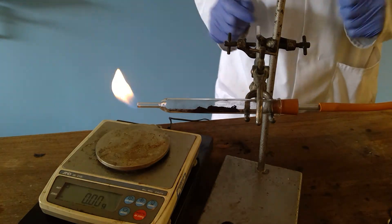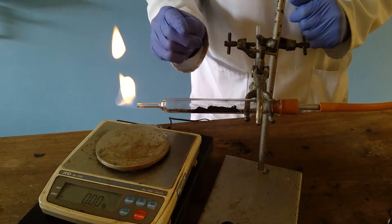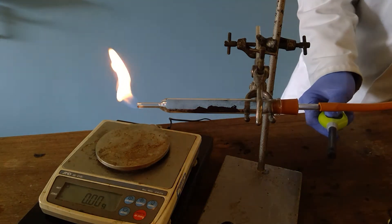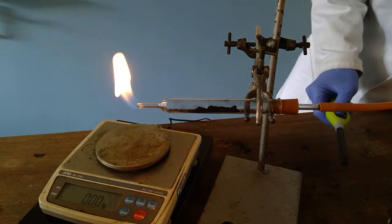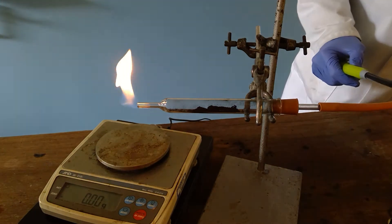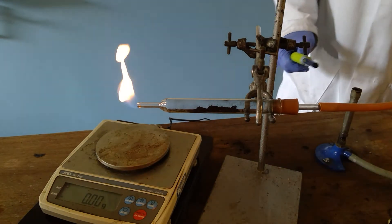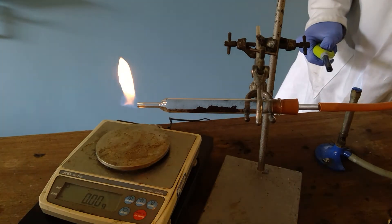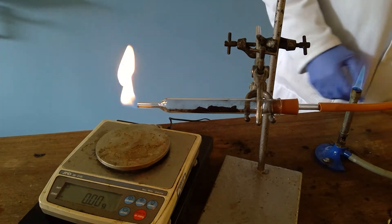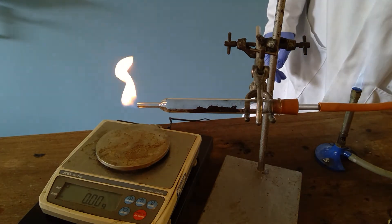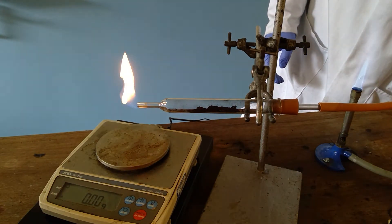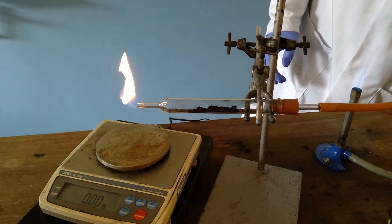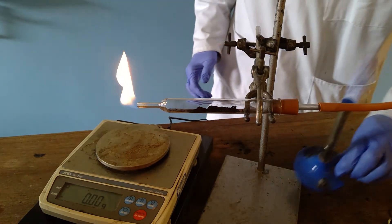The reaction doesn't occur in the cold and so we need to heat the copper oxide. So we will light a Bunsen. Initially we will heat with a small flame but we will build up the heating. So initially a fairly small flame and we will start to heat the copper oxide.